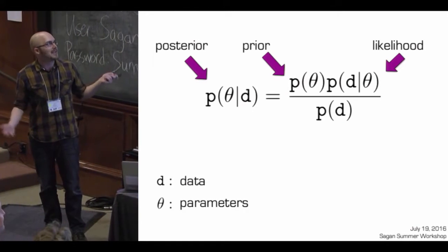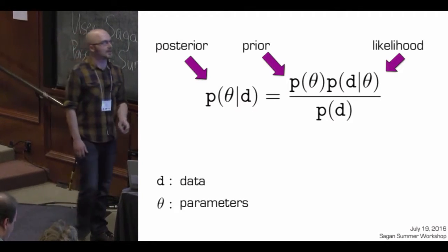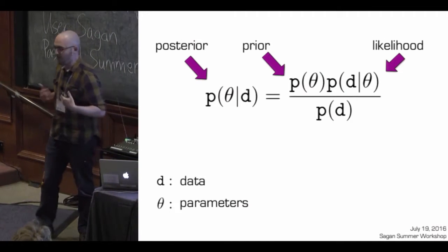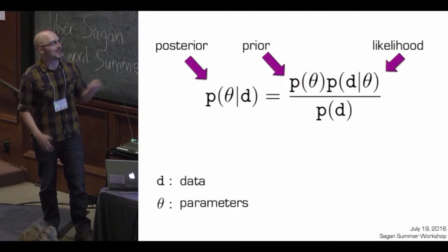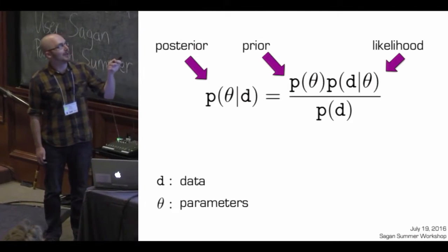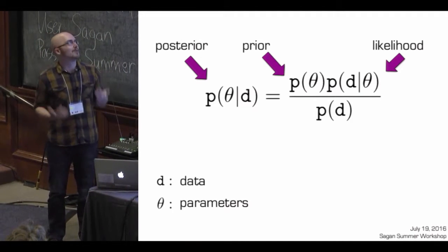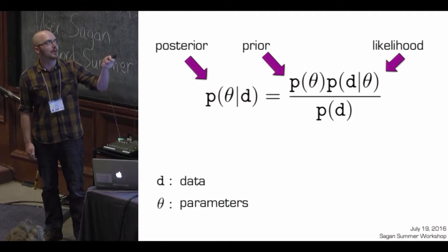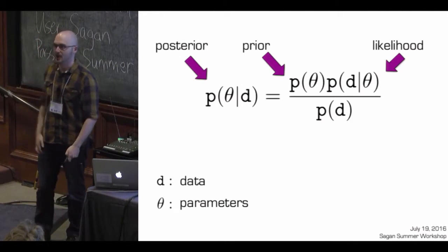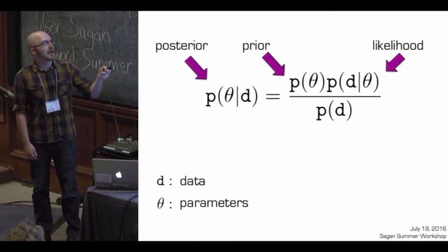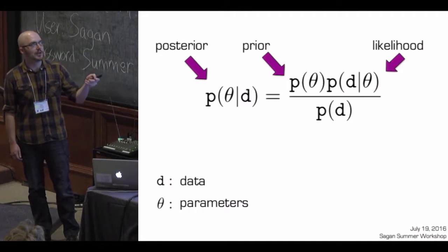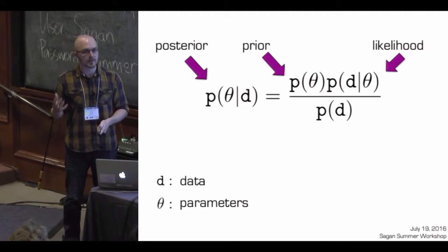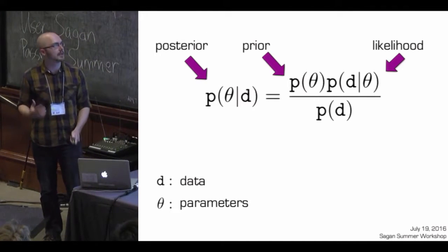So let's go through some intro material. This is Bayes' theorem, as you've seen from previous lectures. I'm a big fan of rote learning, so let's go through this one more time. The posterior probability distribution on your vector of model parameters given your data set is proportional to your prior probability distribution on that vector of parameters times your likelihood function — the probability of generating that data set given that set of model parameters.